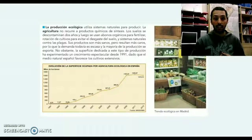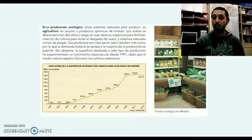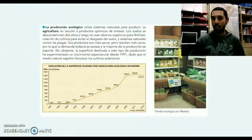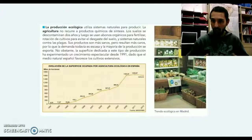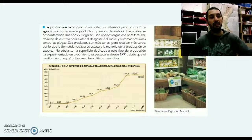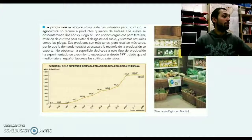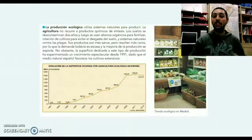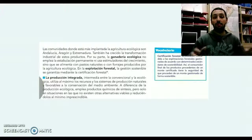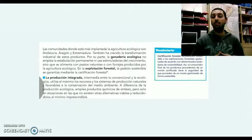Si nos fijamos en el gráfico que tenemos en pantalla, podemos ver cómo cada vez la superficie ocupada por la agricultura ecológica es mucho mayor. Vamos a encontrar cada vez más productos ecológicos en supermercados y tiendas especializadas: vinos ecológicos, productos hortofrutícolas de carácter ecológico. Las principales comunidades punteras en este tipo de agricultura son Andalucía, Aragón y Extremadura.